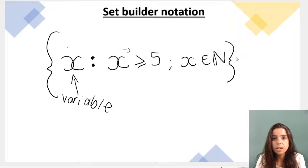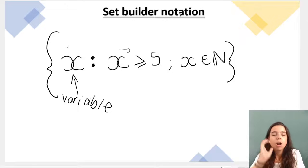What I'm saying is my variable x in this case is a member of natural numbers. But I'm breaking the set down further. I'm saying it's not all the natural numbers. Remember natural numbers start from 1, but I'm only considering numbers that are greater than or equal to 5.